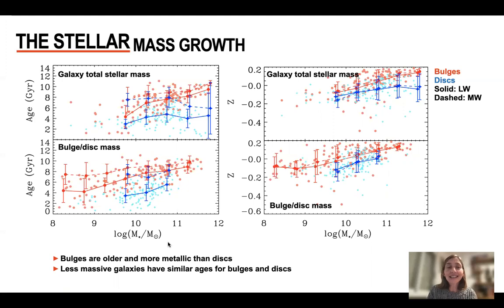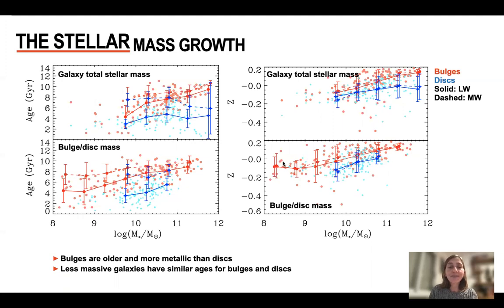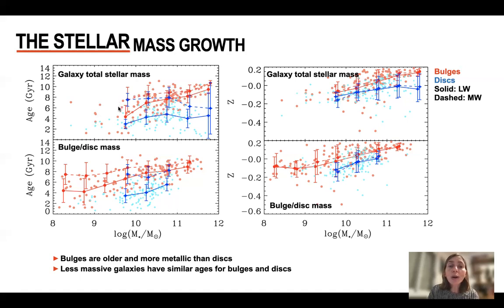Because we have dissected the galaxy light into bulges and disks, this mass can be the galaxy total stellar mass — shown in the top panels — or the bulge or disk masses separately, shown in the bottom panels. Red points correspond to bulges, disk data points correspond to disks. What we see in general is that bulges are always older and more metal-rich than the disks. This is true for all cases, but only when we go to our low-mass galaxies — around 10^10 solar masses — the ages of bulges and disks become similar.